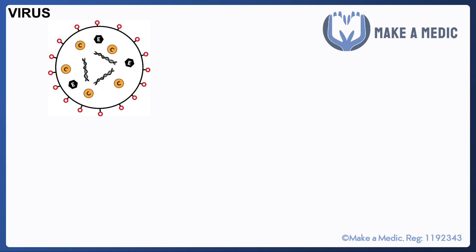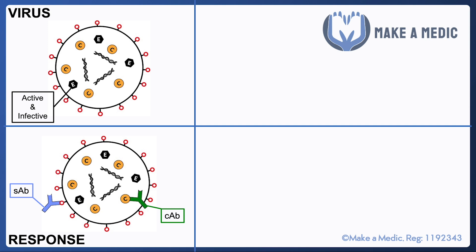Here we have a representation of the hepatitis B virus with a few components. You can see there's some double-stranded DNA, there's an e-antigen, there's a core antigen denoted by the 'C', and the red circles on the outside are the surface antigens. The key point is that the e-antigen is not always present, but its presence is suggestive of active viral replication and indicates that the patient is highly infective.